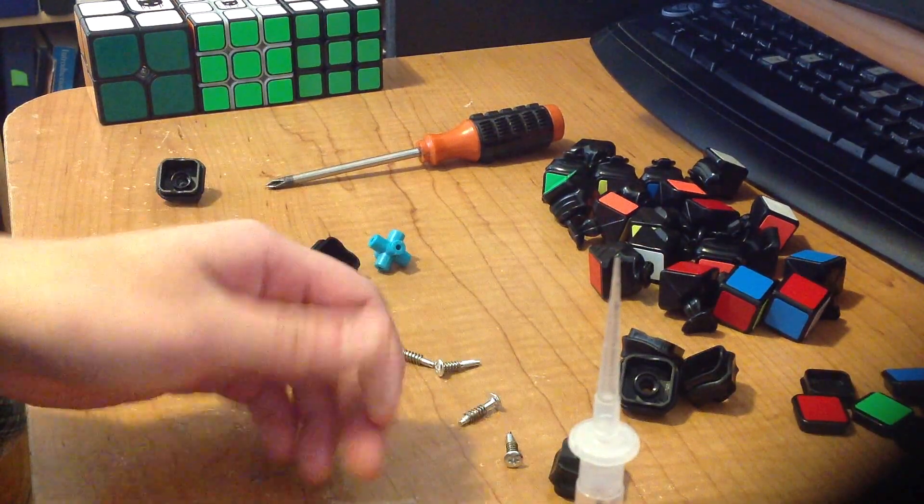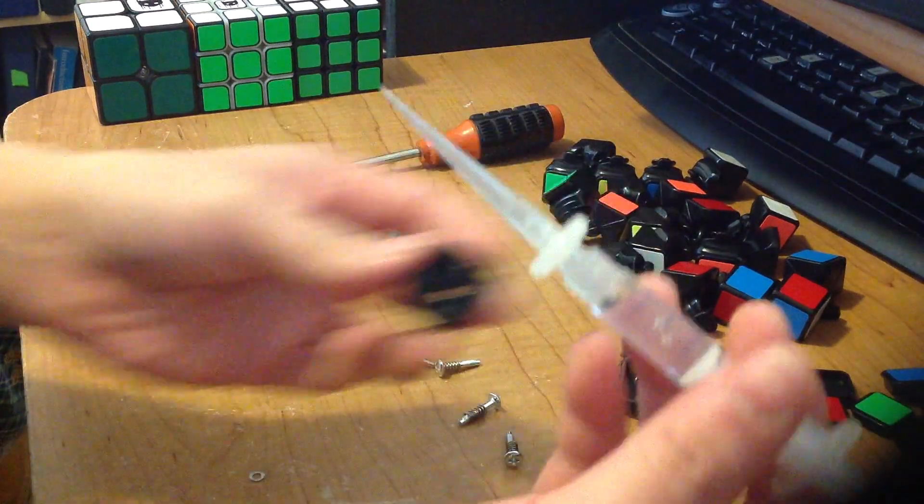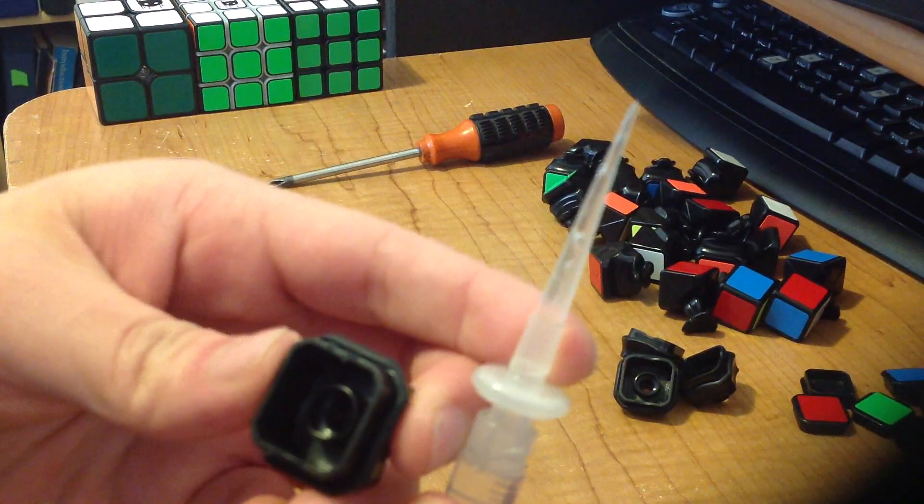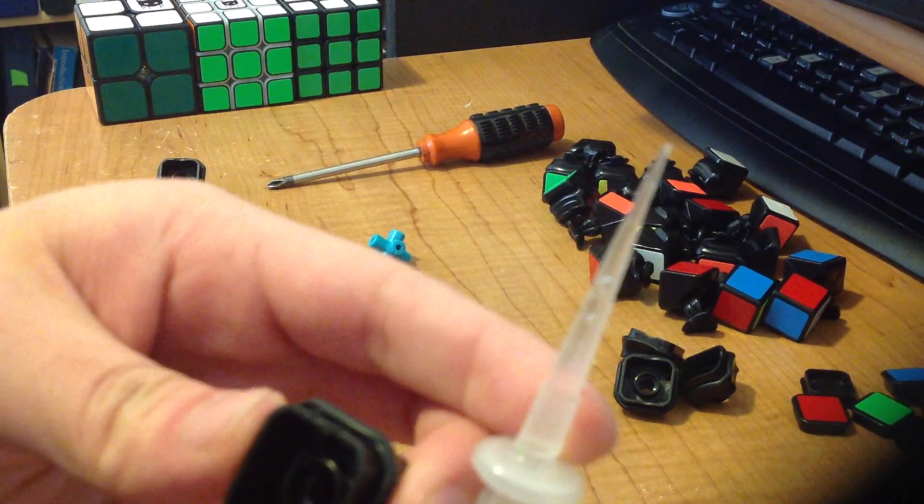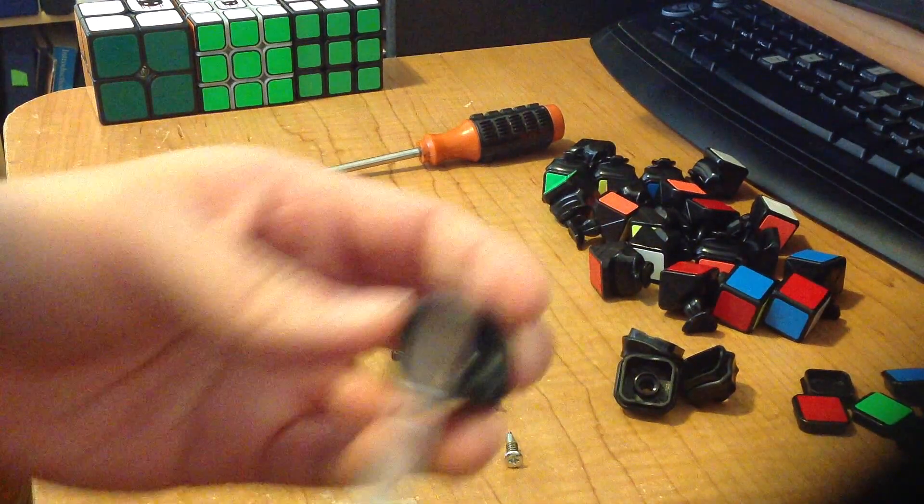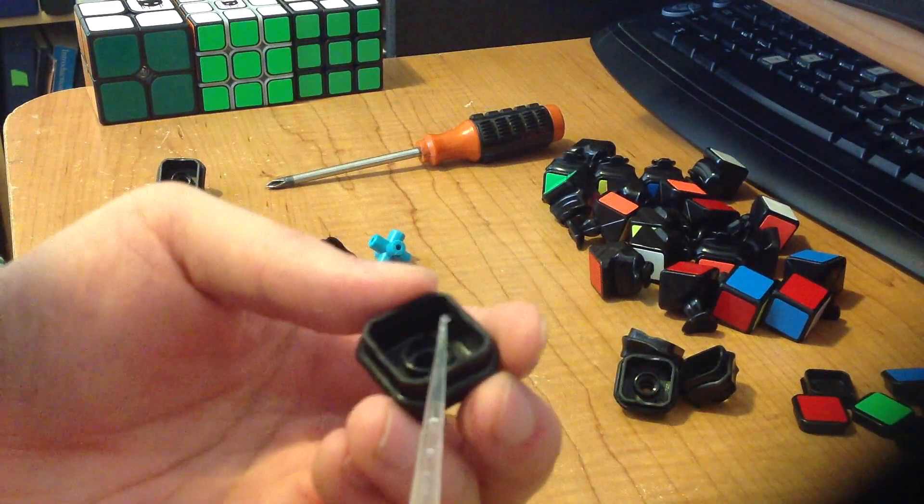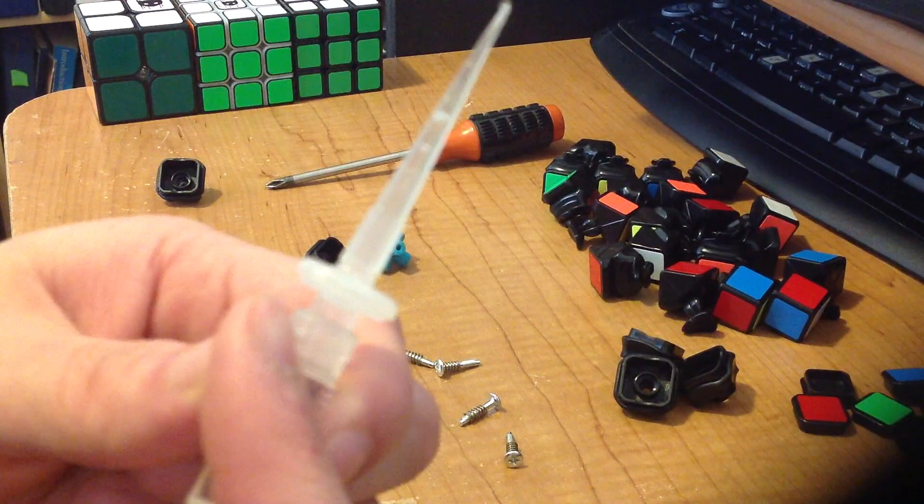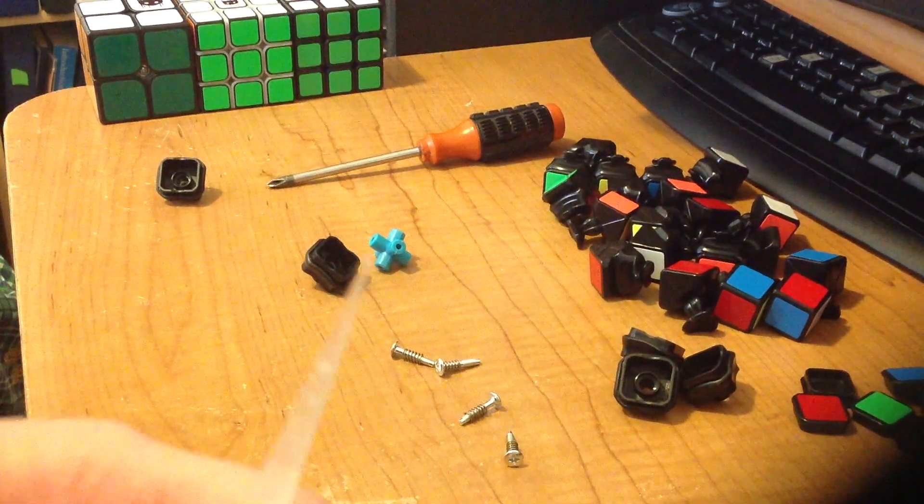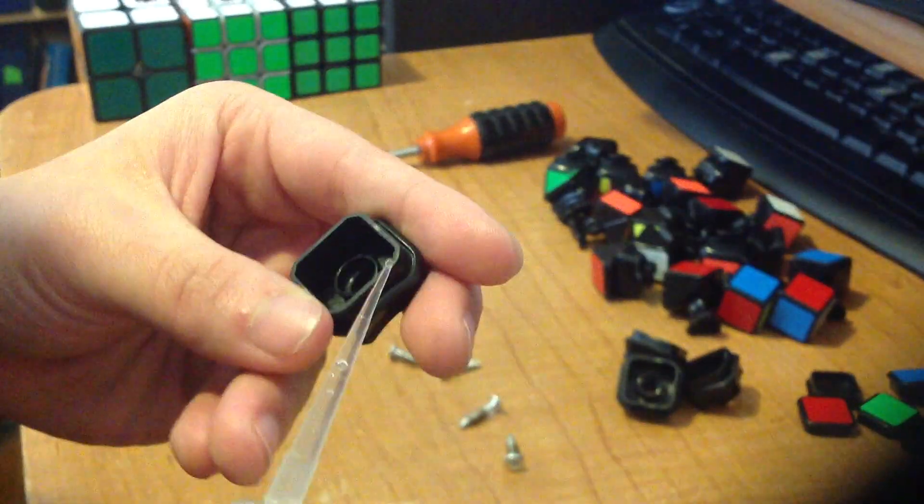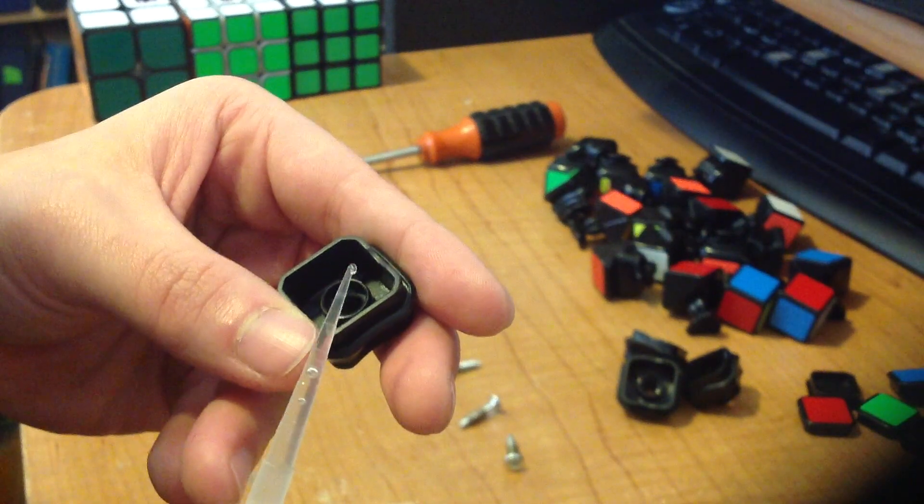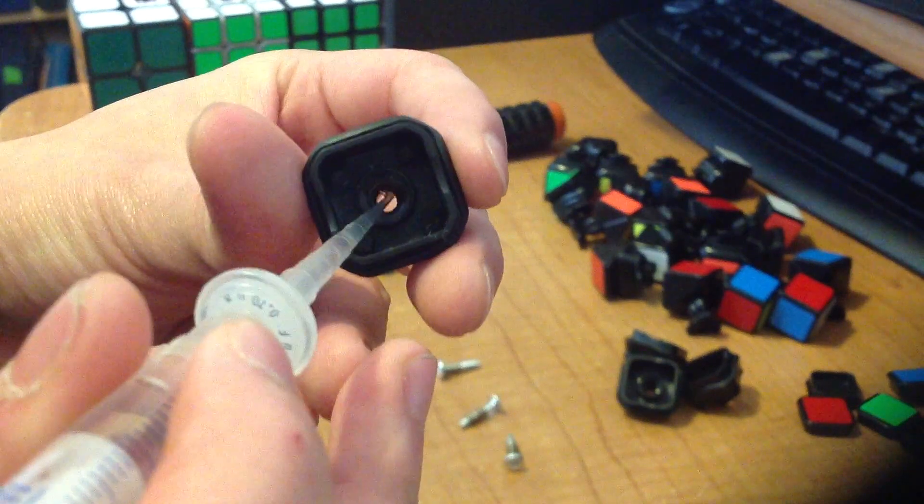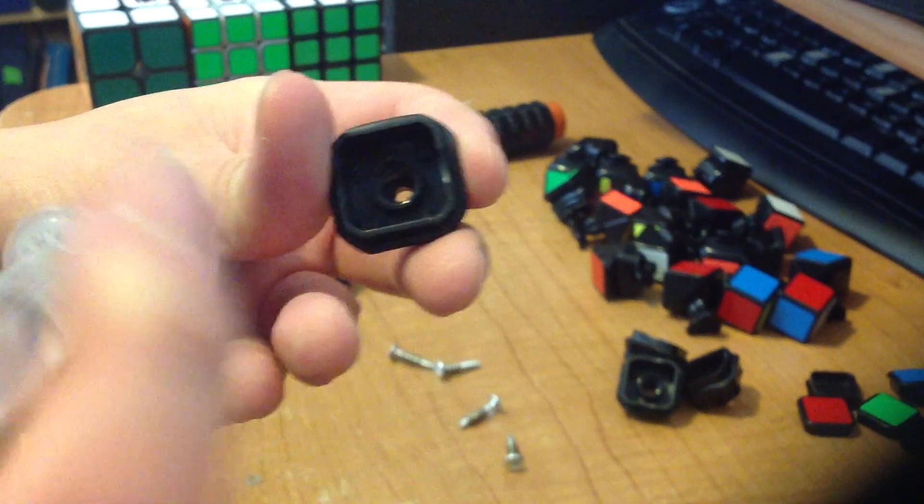So first, you take a small drop of lube. I usually use this much. So I usually use this much lube and I lubricate the very bottom ridge where that washer was.